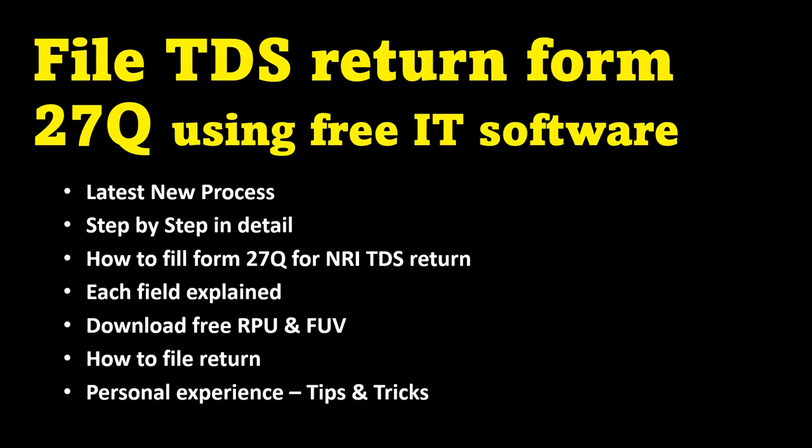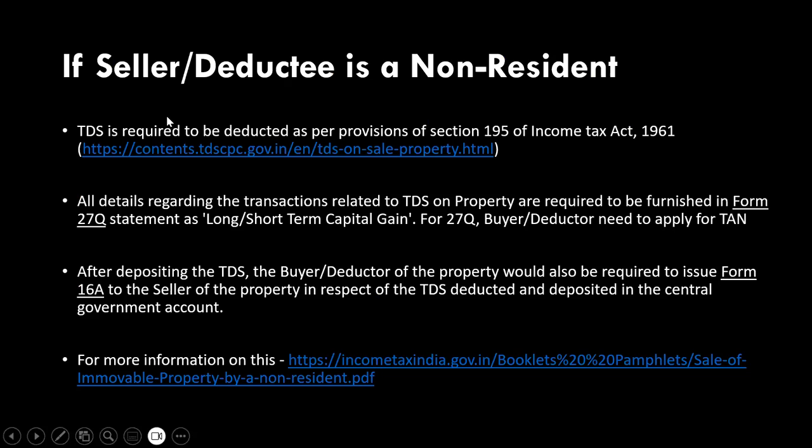I'll share my personal experiences and try to cover each and every field, including how to download the free RPU and FVU files that are required to file this return. The first thing is: if the seller or deductee is a non-resident, and you are the buyer who purchased from a Non-Resident Indian, then you are required as a buyer to deduct TDS as per the provisions of Section 195 of the Income Tax Act. I'll share the link that talks about this in detail.